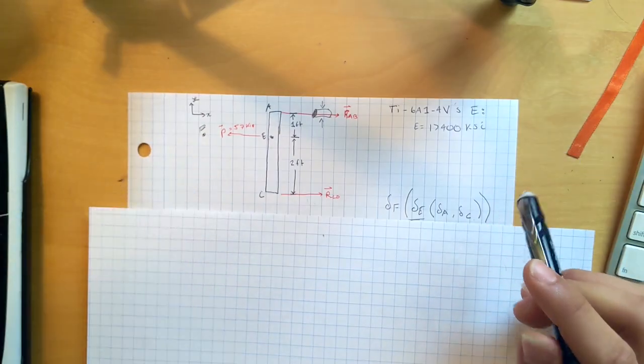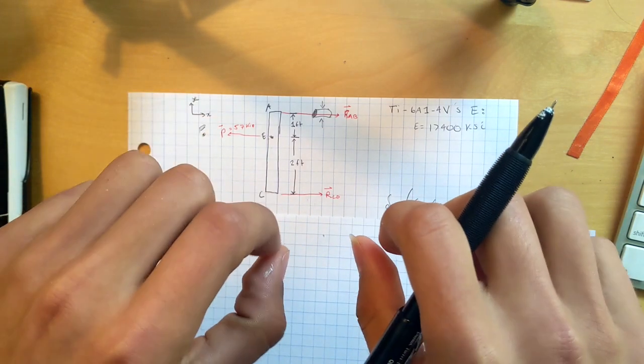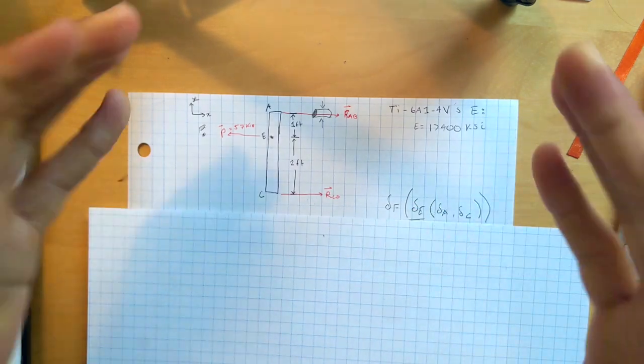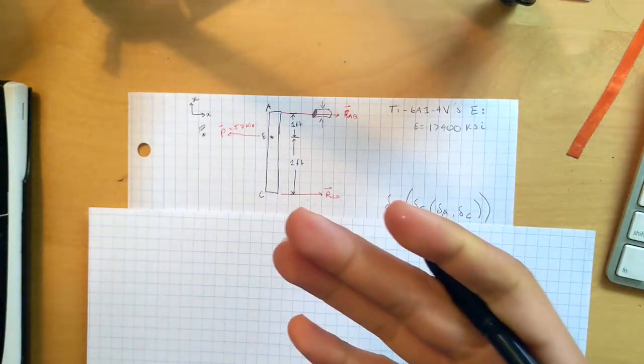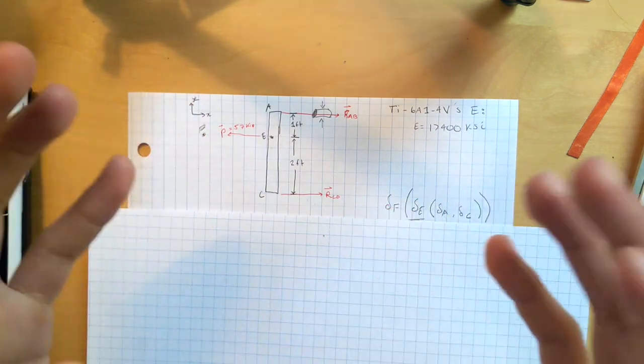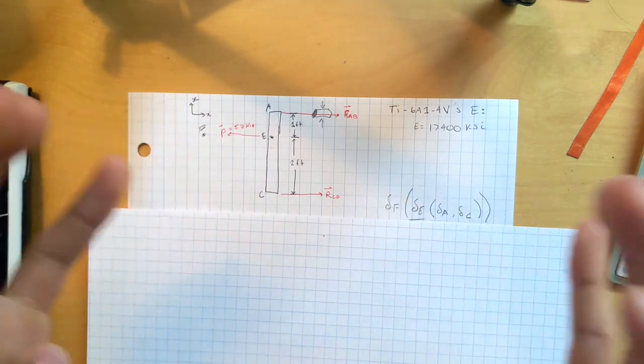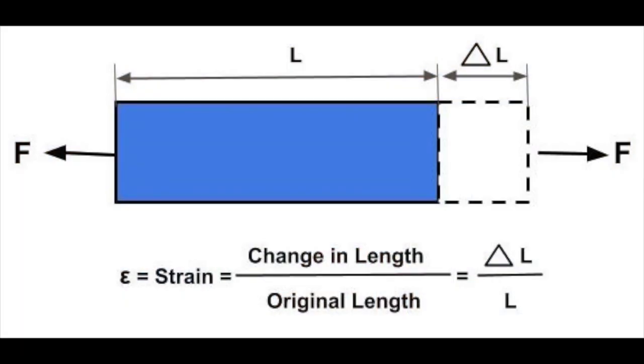So let's start off by talking about strain. Whenever we think about something being yanked or compressed or having forces on it, it's undergoing stress, it's also undergoing strain. Strain has to do with that change in length, has to do with the dimensions changing. So whenever we're trying to find a distance, we can think about strain.